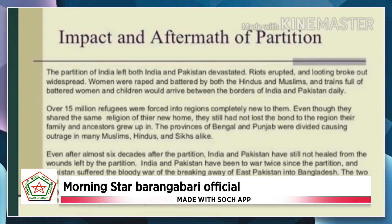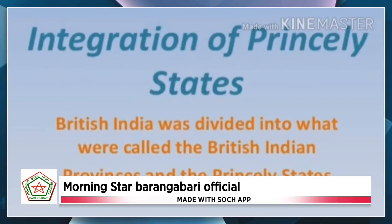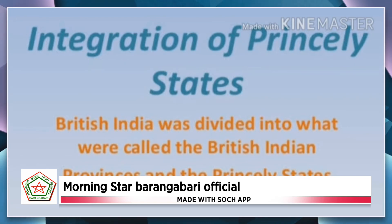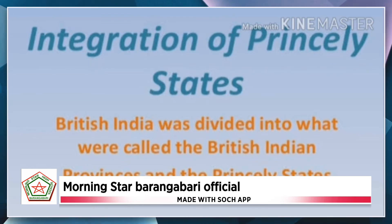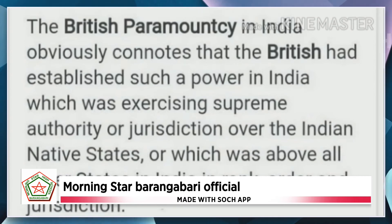Now let's discuss about the integration of princely states. British India was divided into British Indian provinces and the princely states. The British Indian provinces were directly under the control of the British. The princely states enjoyed some form of control over their internal affairs as long as they accepted British supremacy — this was called the paramountcy of the British crown.